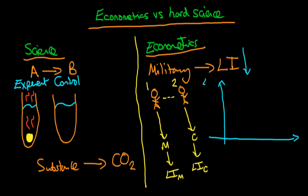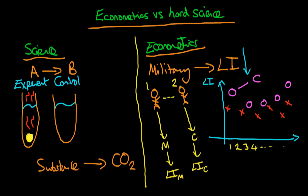An example here might be that we have the lifetime income for a range of individuals — individuals one, two, three, four and so on. We have a large number of individuals and we have whether or not each individual actually went into the military. If I illustrate with red crosses the individuals that went into the military, we might have this relationship here, and with blue or purple circles all those individuals that didn't go into the military. From this dataset we could look at the average lifetime earnings for those that remained civilians and compare that with the average lifetime earnings for those that went into the military.